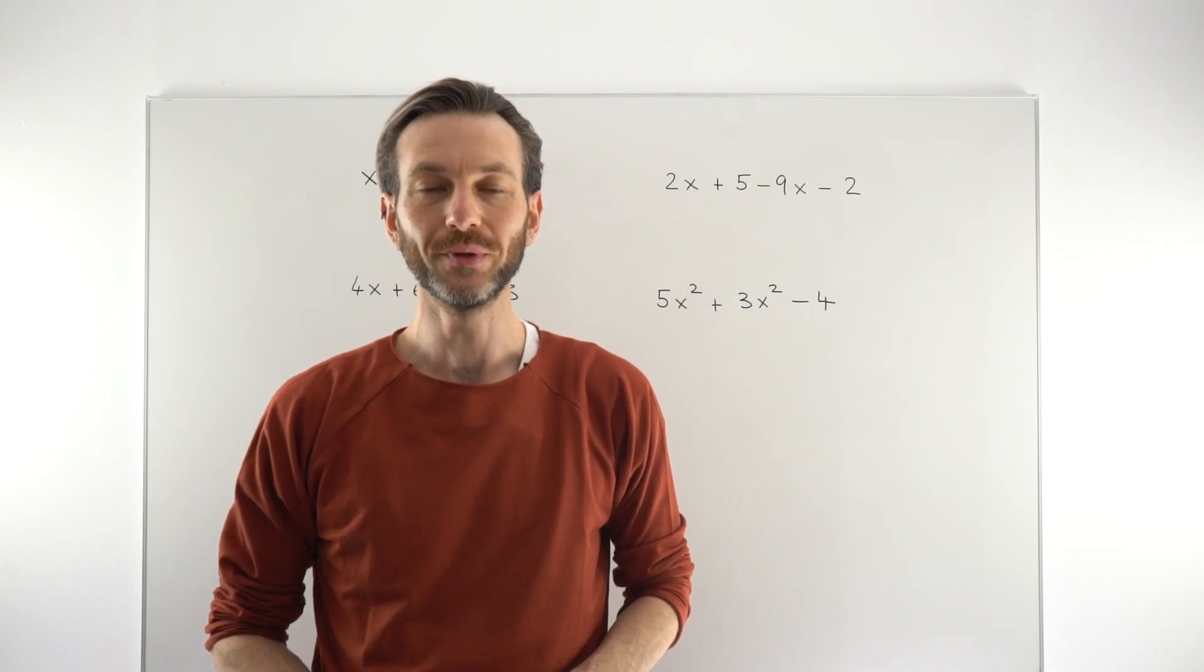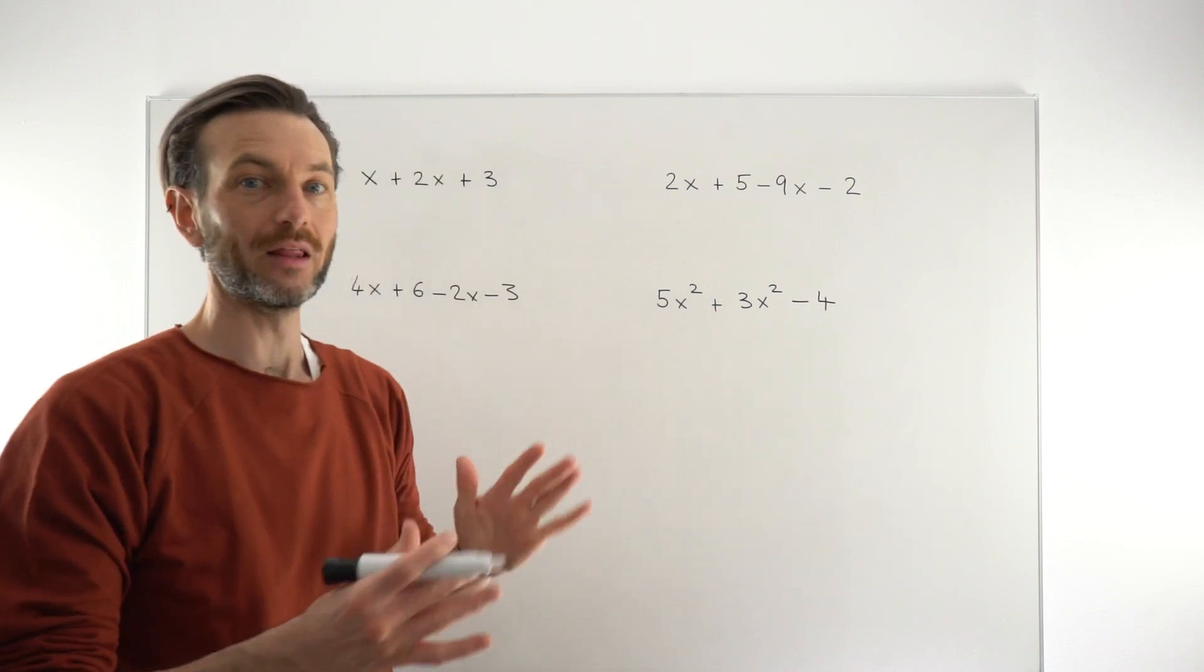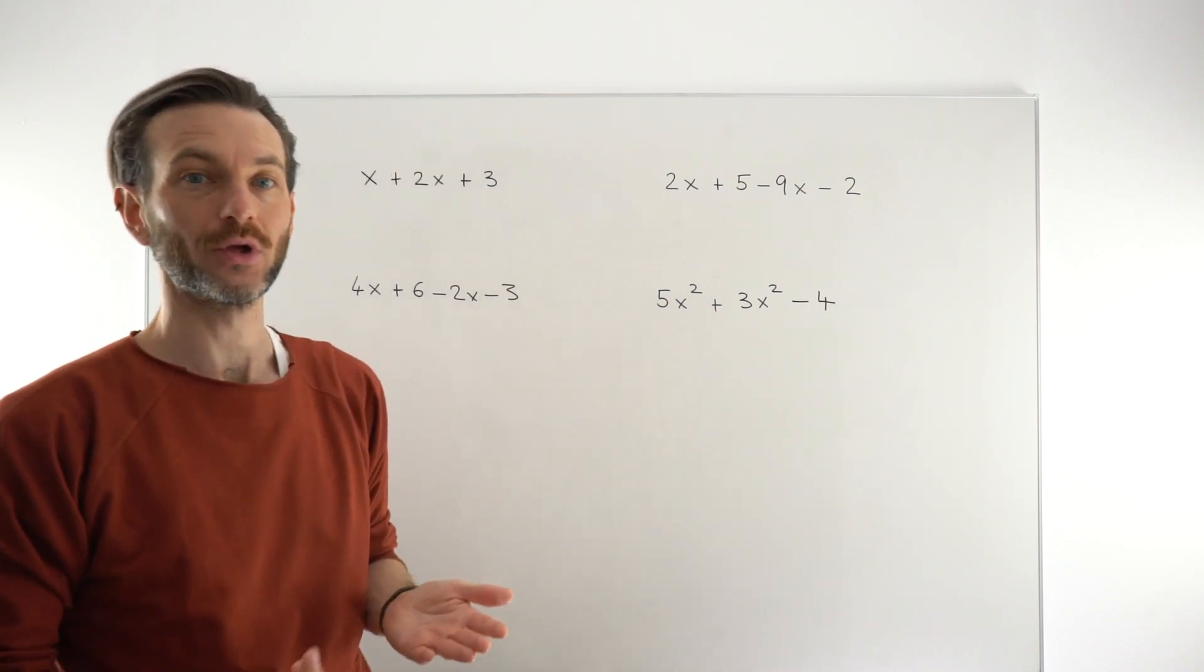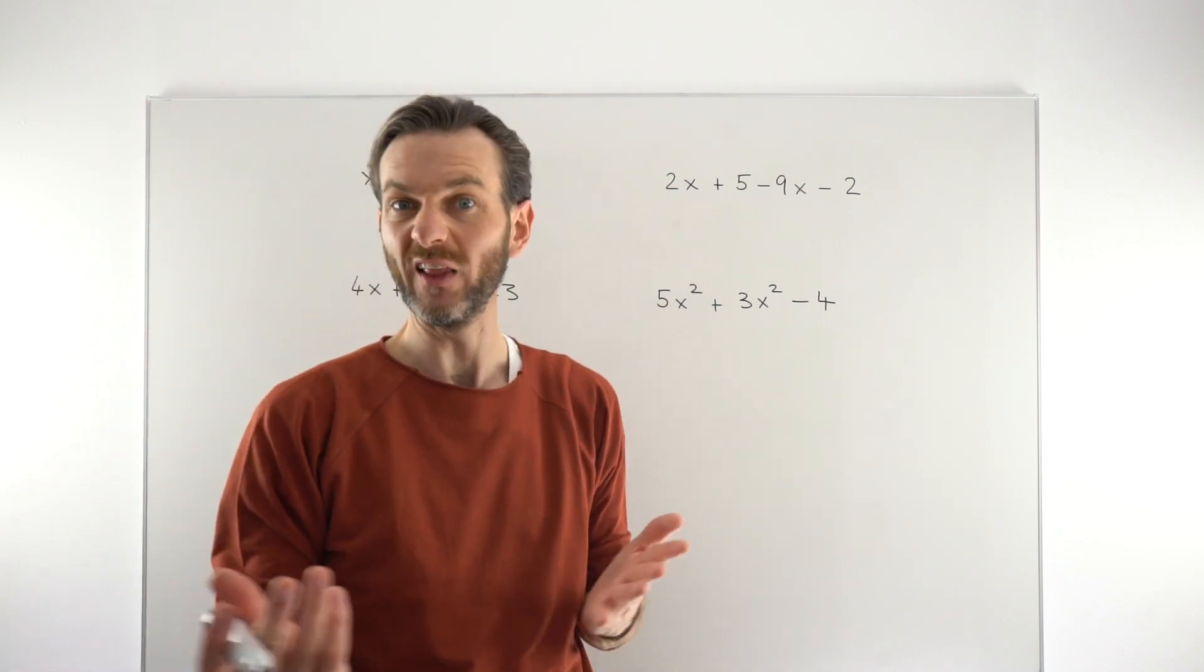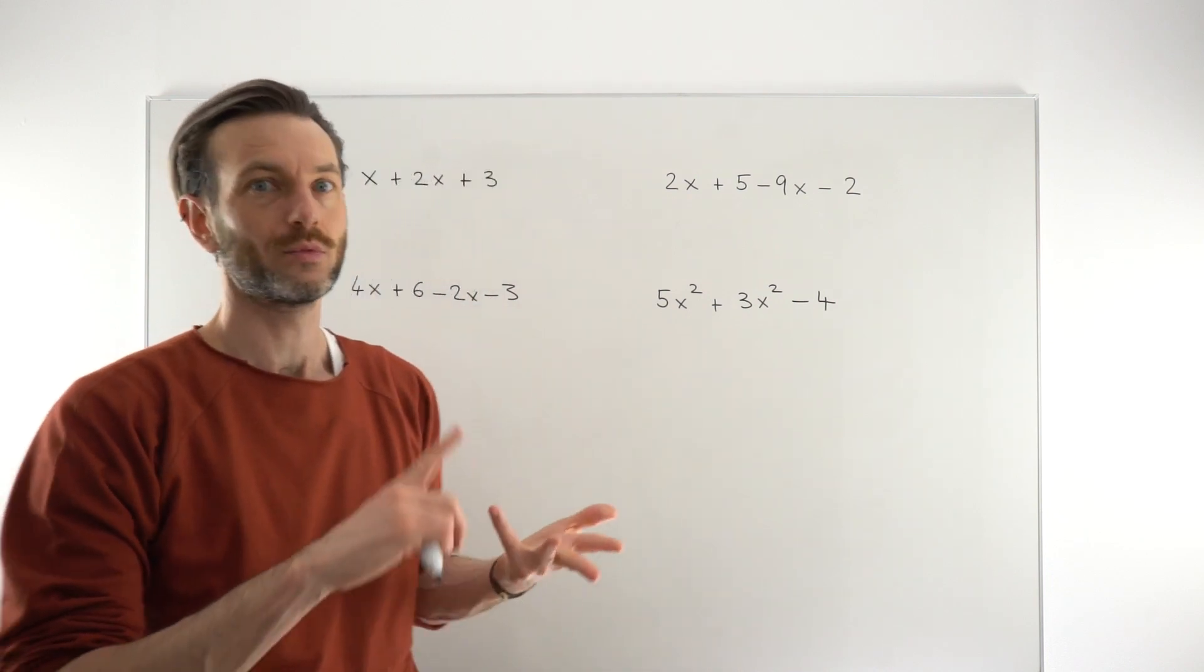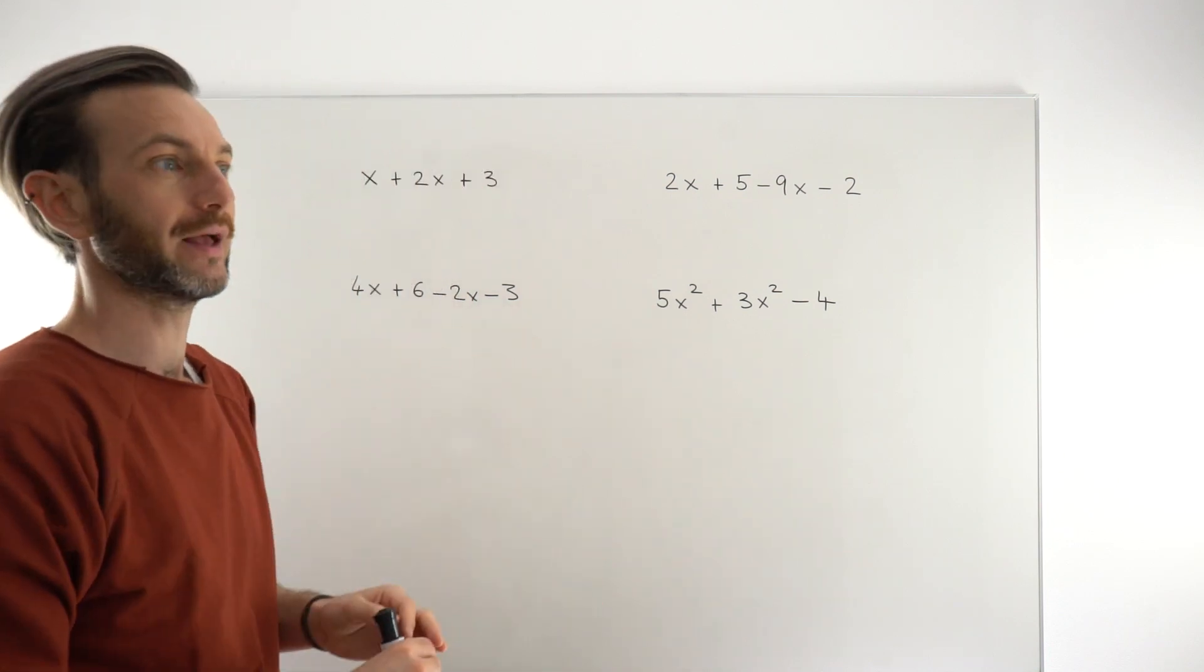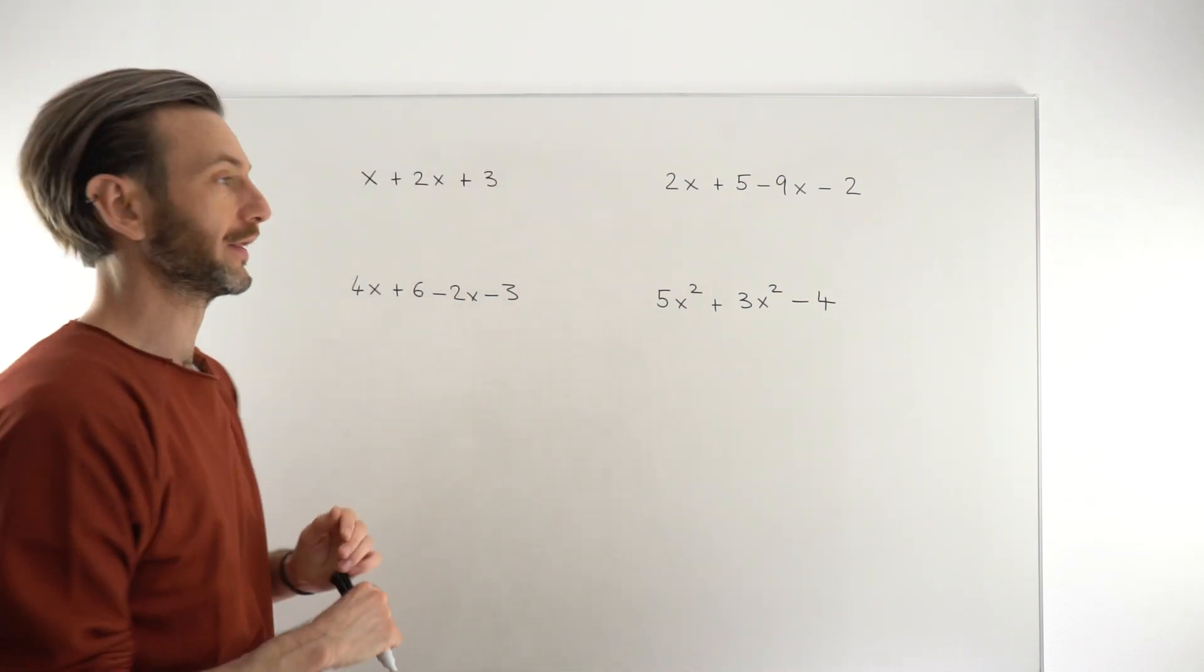In this class we're going to take a look at simplifying algebraic expressions, which really just means combining the like terms. The like terms are just the terms which are alike - the x's, the numbers, the square root of 2's, all the things that look the same you can combine, and that is what we call simplifying the expression.